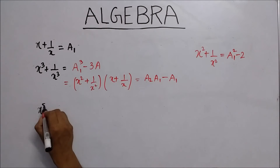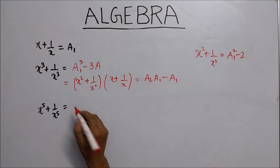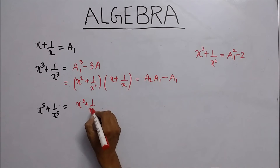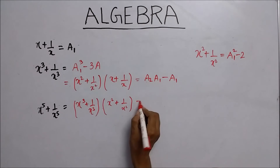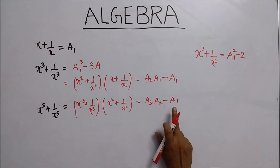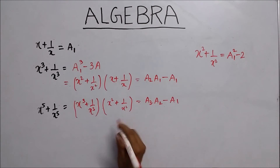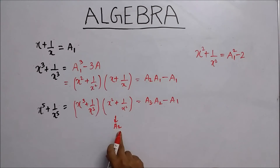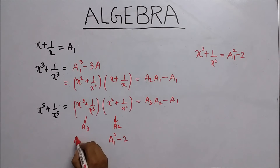Similarly, when you have to find x to the power 5 plus 1 upon x to the power 5, just rewrite this as x cubed plus 1 upon x cubed, multiplied by x squared plus 1 upon x squared. Rewrite this in the form a3 times a2 minus a1. Here a1 is the value of x plus 1 upon x, a2 equals a1 squared minus 2, and a3 equals a1 cubed minus 3a1.